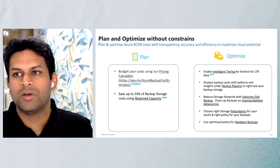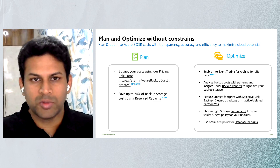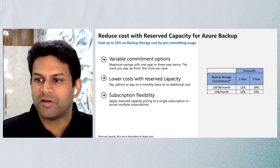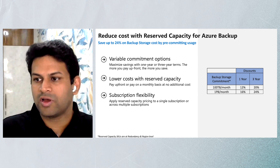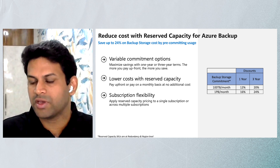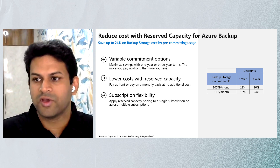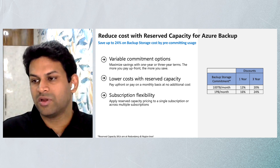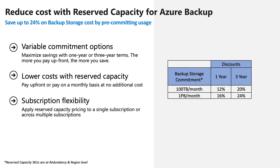For reserved capacity specifically, a pre-commitment of 100 TB per month gives you a 12% discount for one year and 20% for three years. For one petabyte per month pre-commitment, you get 16% and 24% respectively. You can pay upfront or on a monthly basis at no additional cost, and you can use this for a single subscription or across multiple subscriptions.